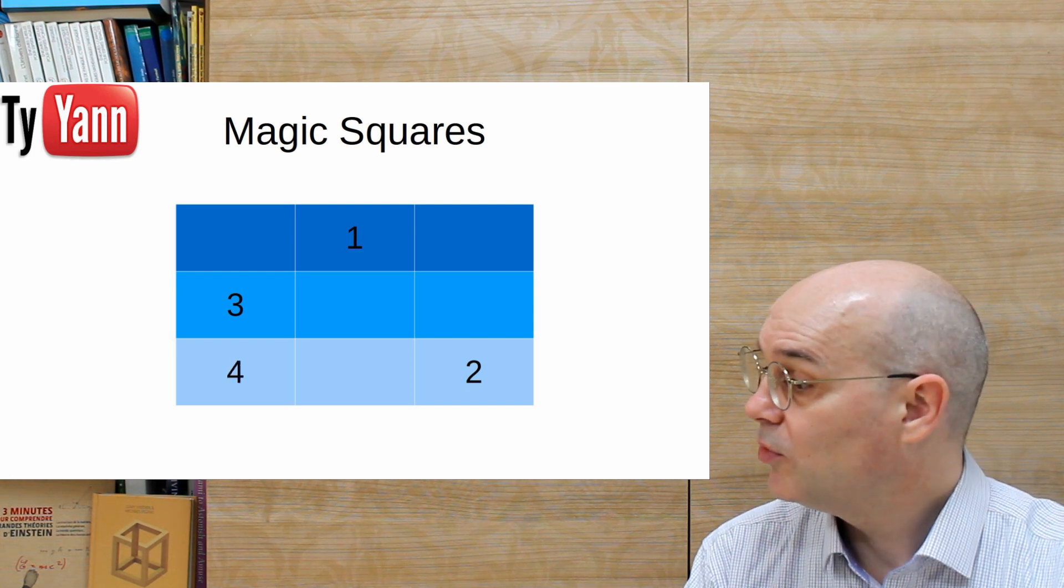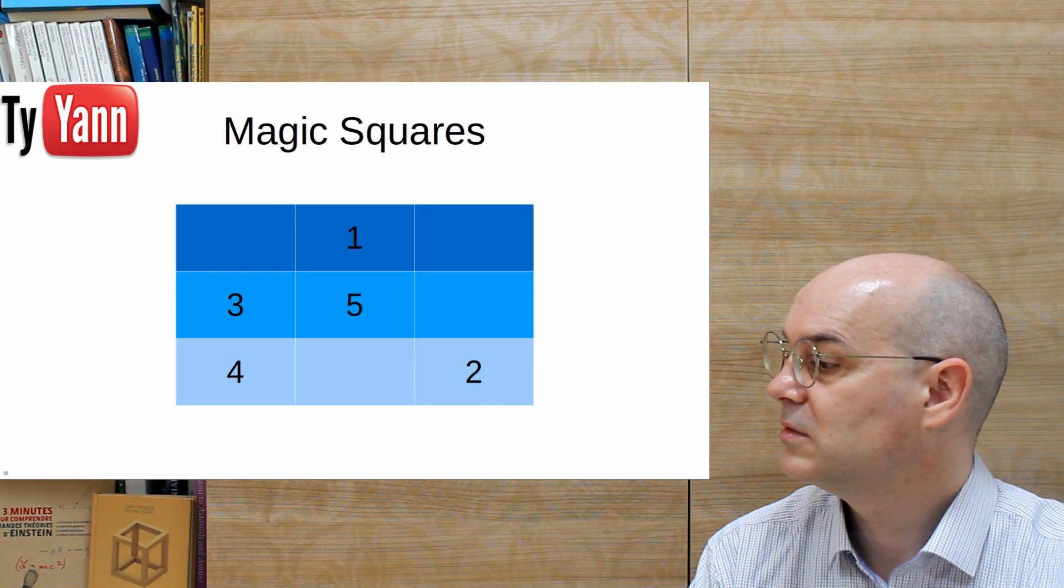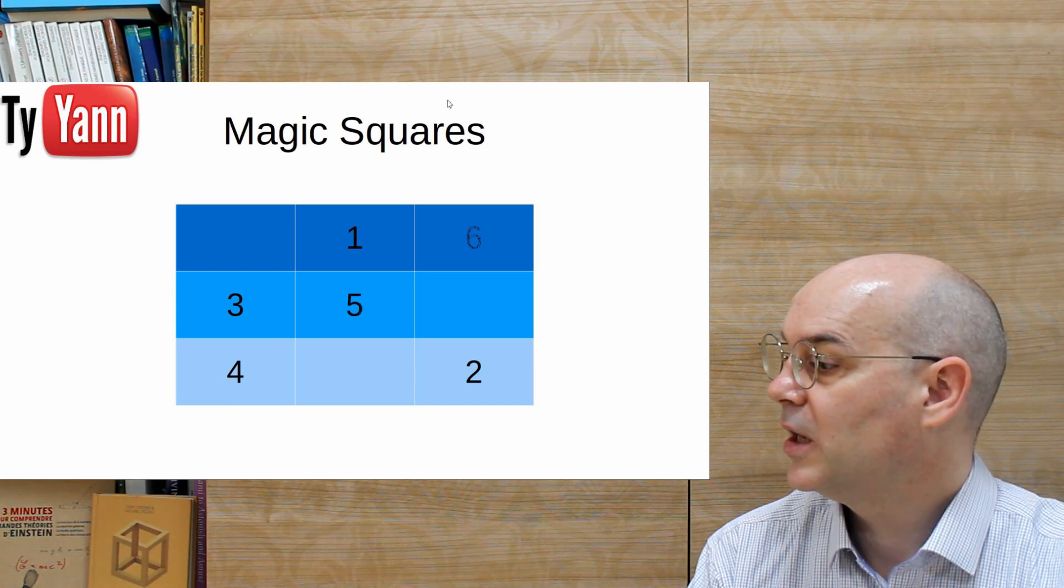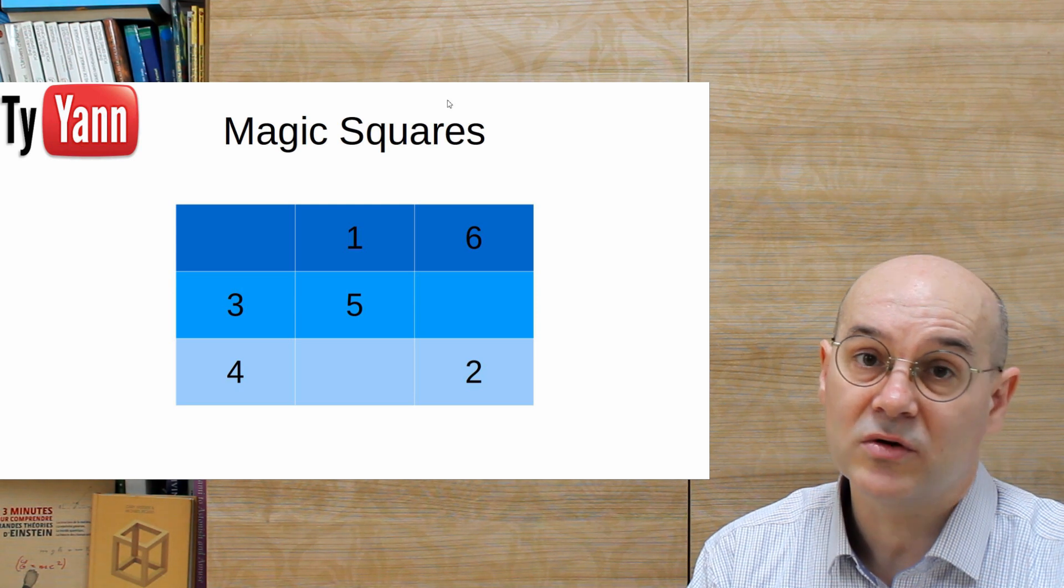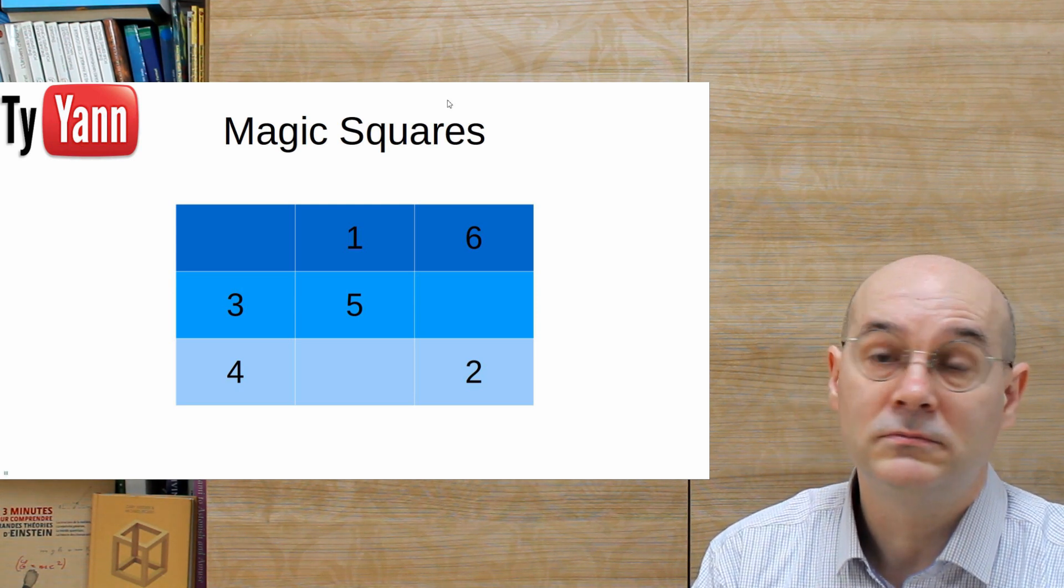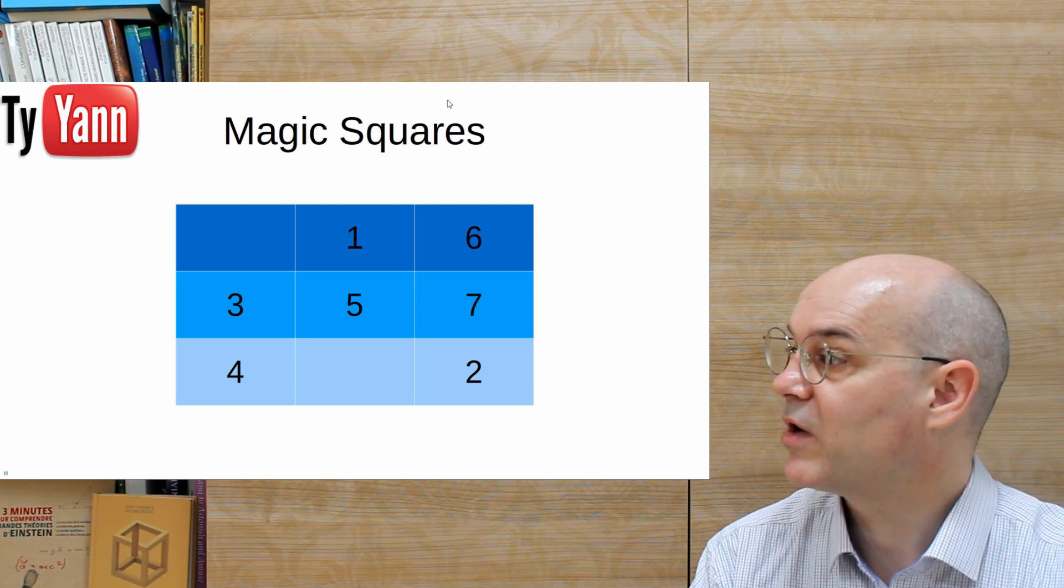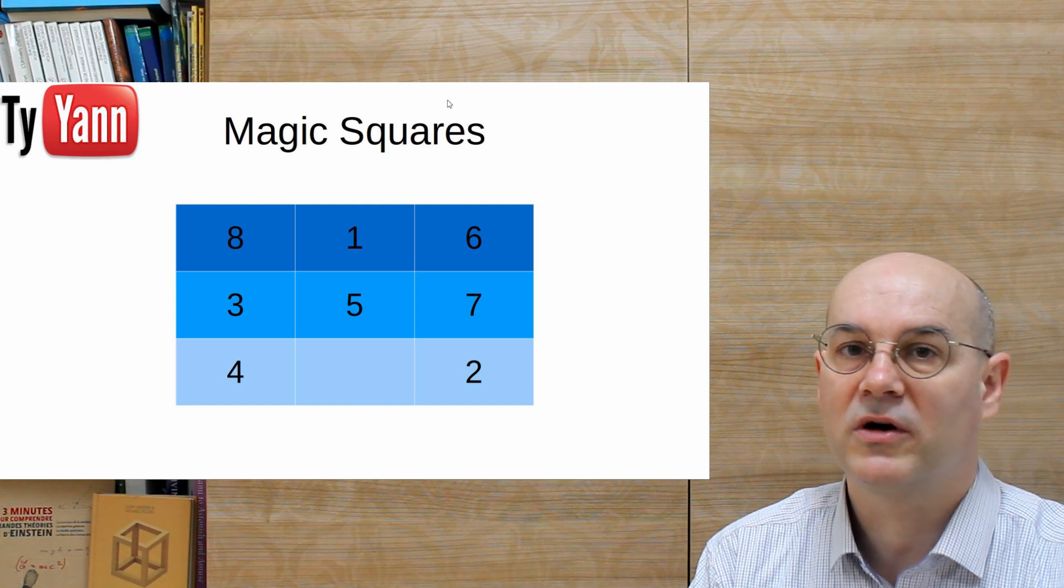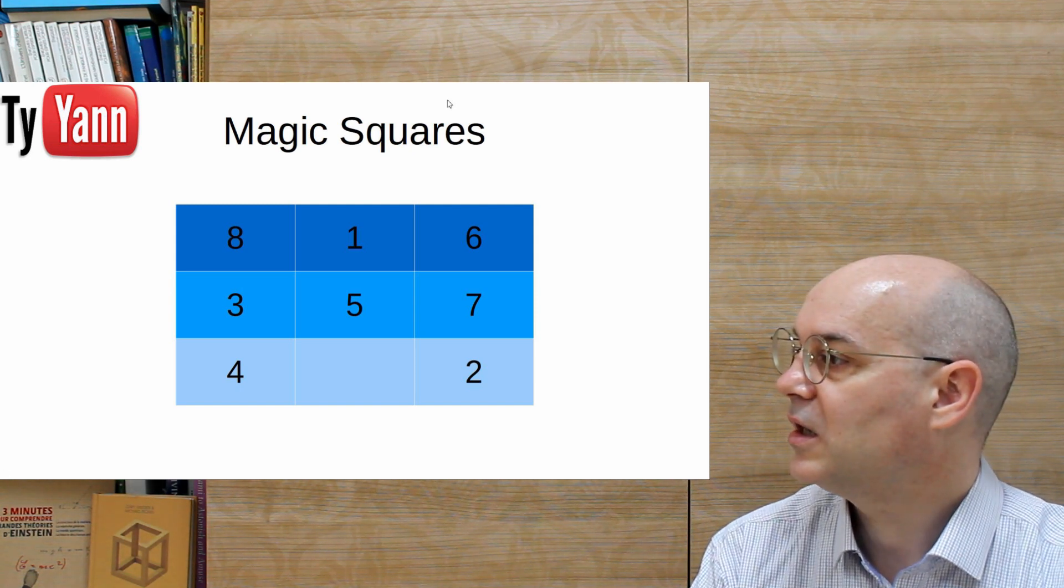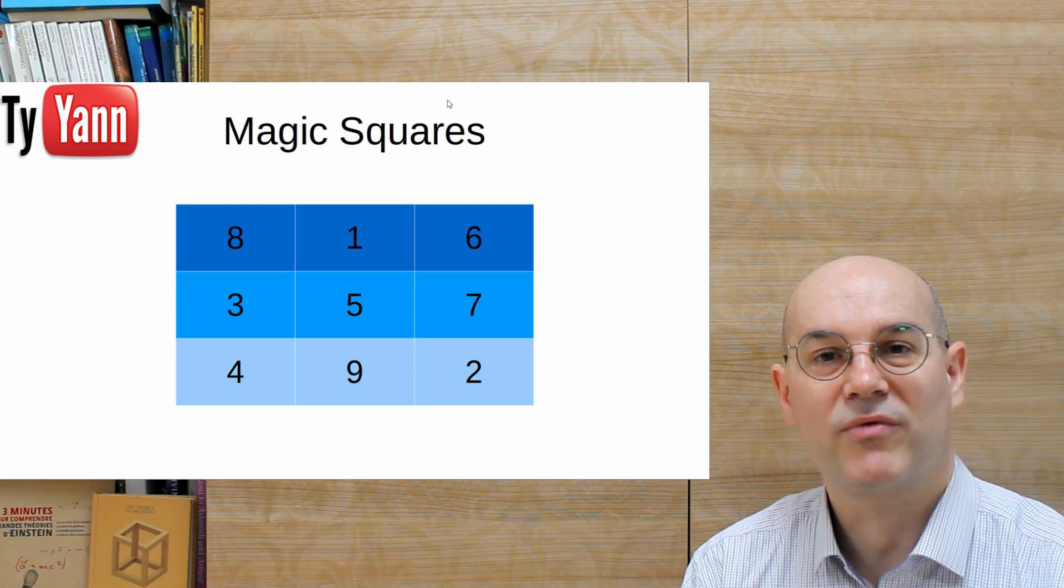Now if we go upright, we can't because the place is already taken by 1. So instead of going upright, we go down. And then we go back to going upright. And once we add 6, we cannot go upright because we arrive at the place taken by 4, so we go down. For the 8, we wrap around and arrive at the corner. And finally, the 9. And that's it, we have our 3x3 magic square.